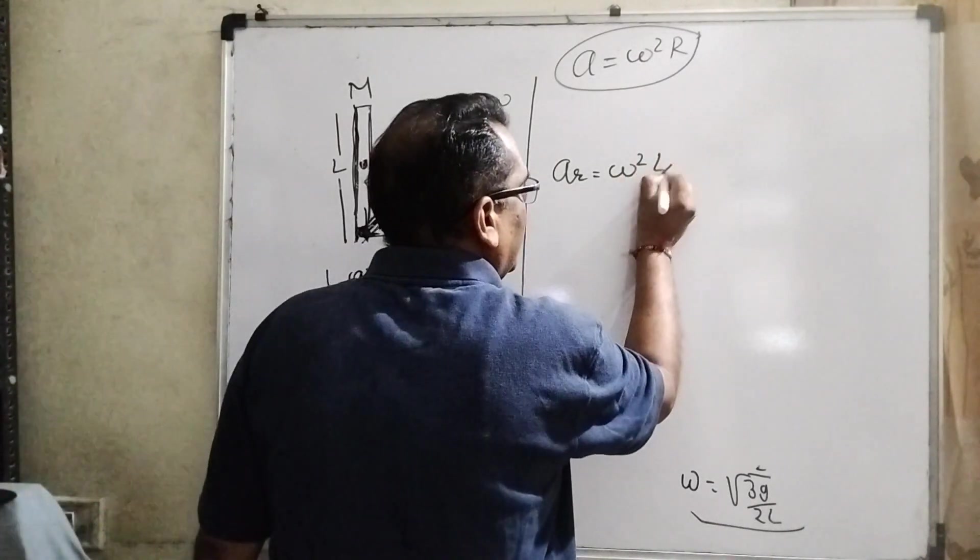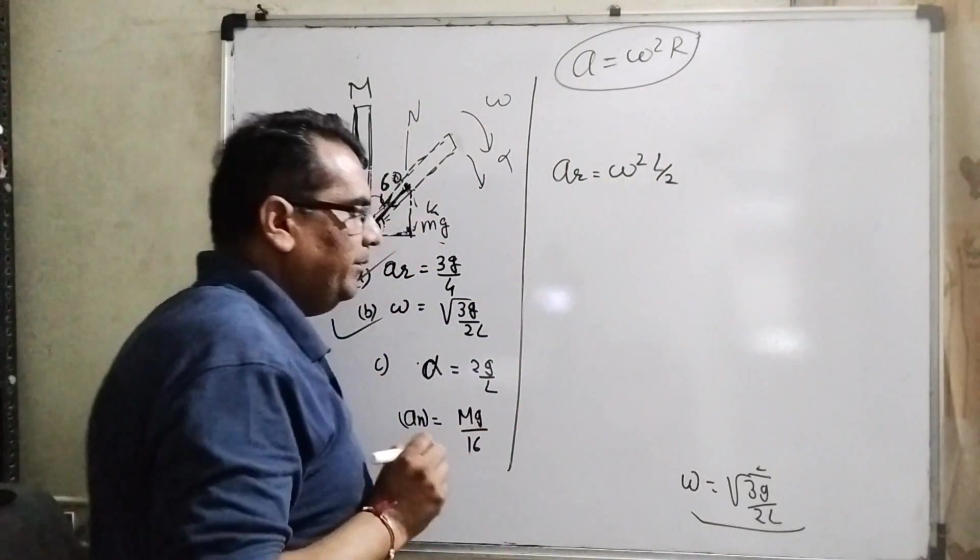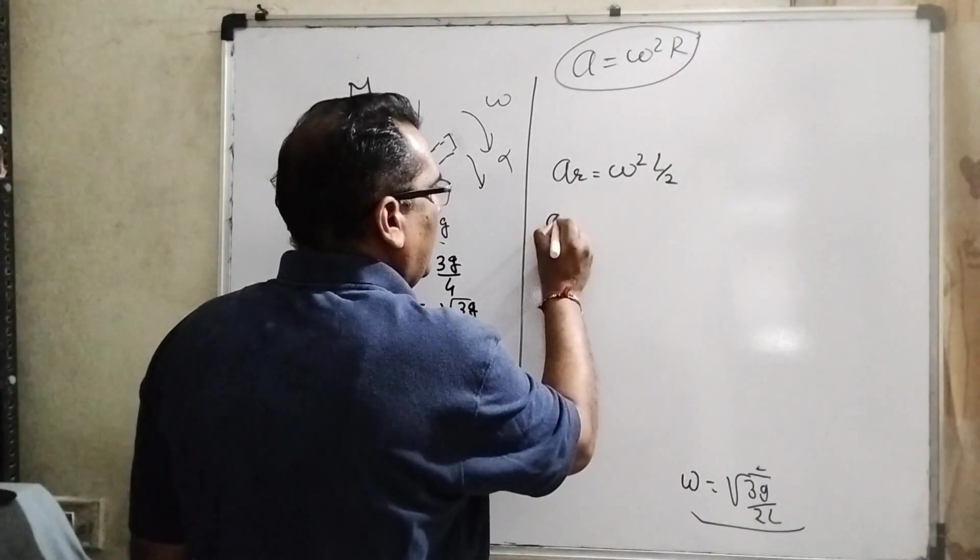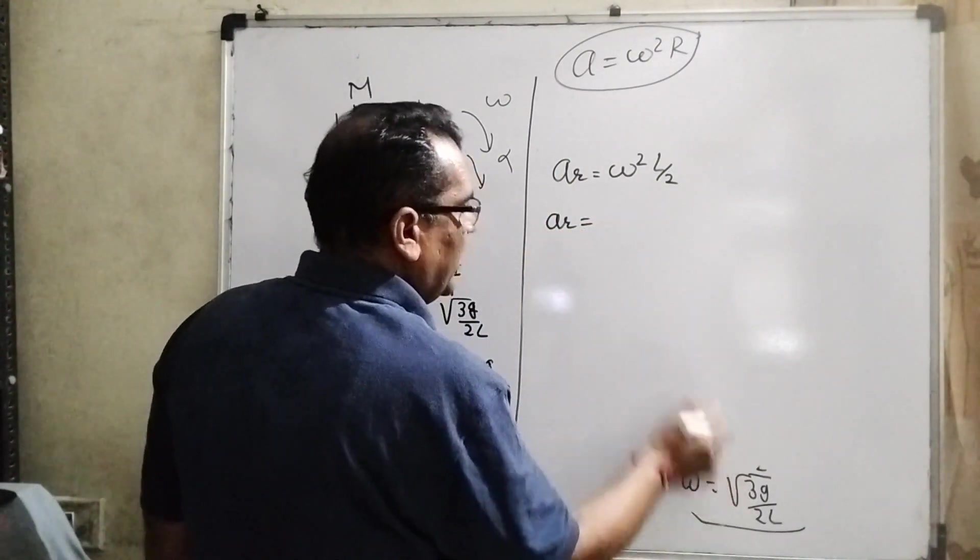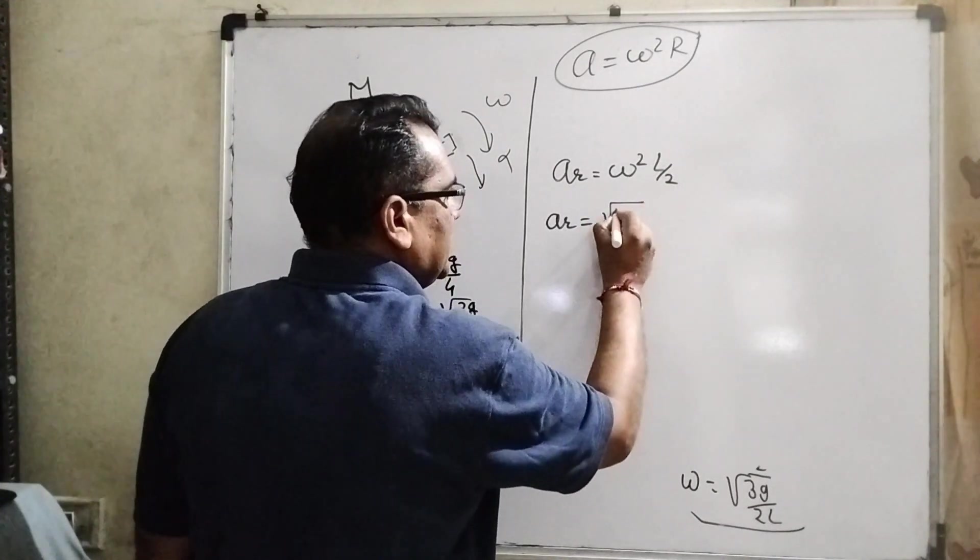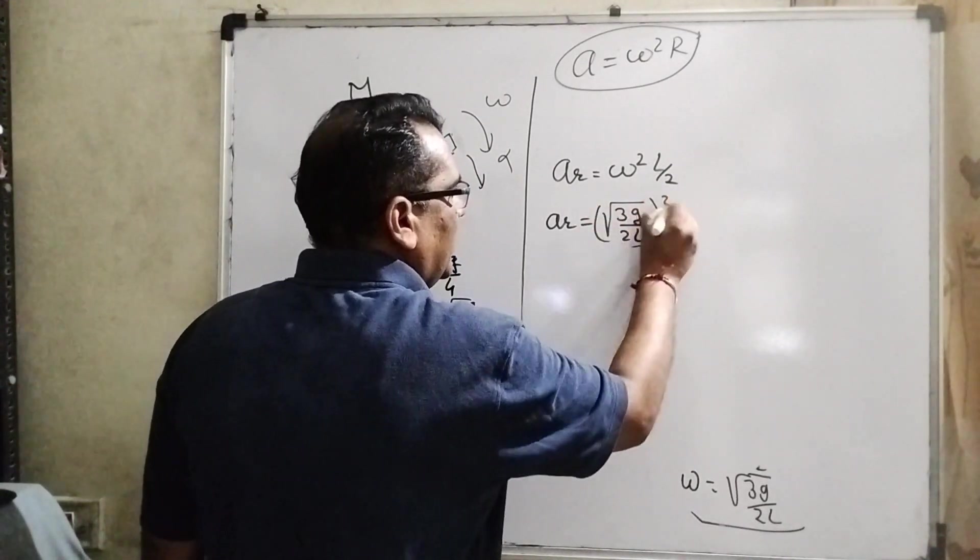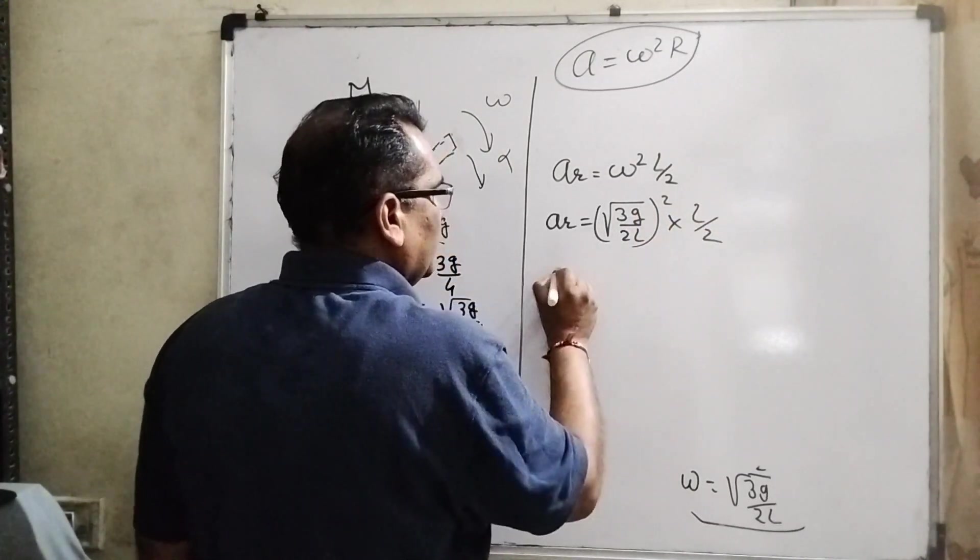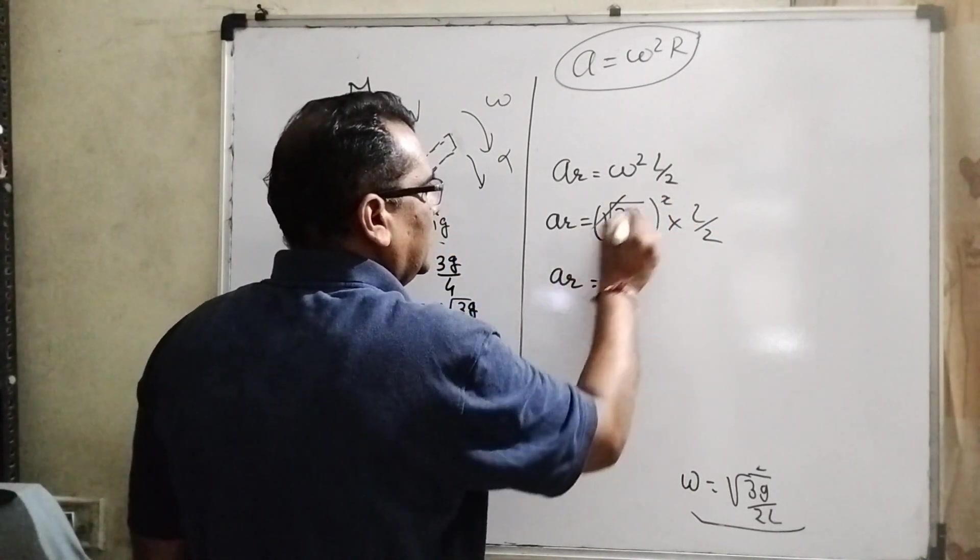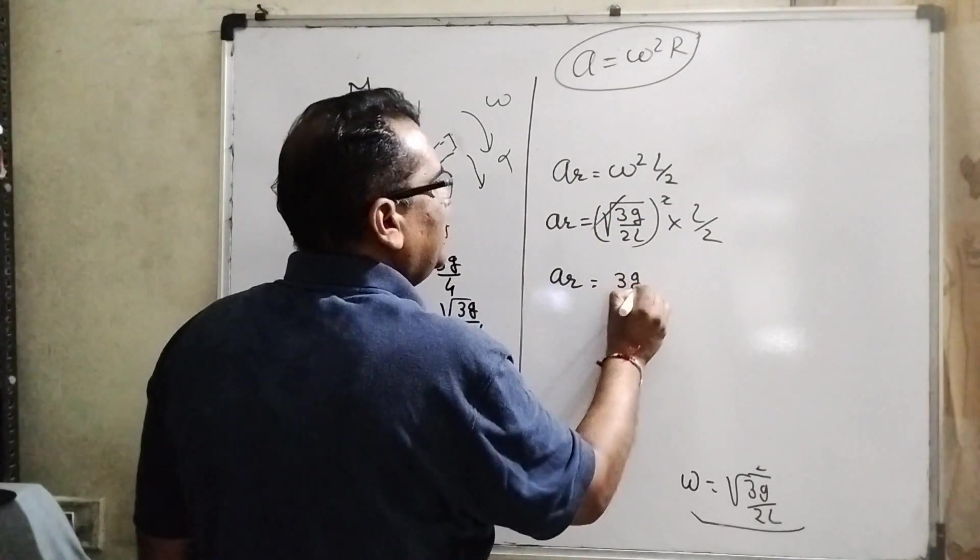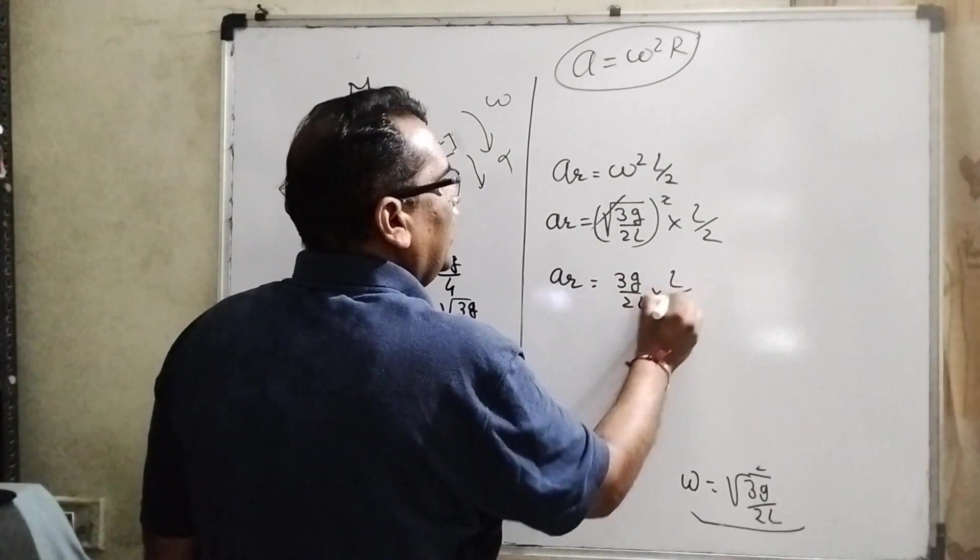We have to put this distance means from the hinge to center of mass. What is the distance? L by 2. So we have to substitute here L by 2. Then what is the value of omega? We have already found out omega squared equal to root 3g by 2L whole squared equal to L by 2.